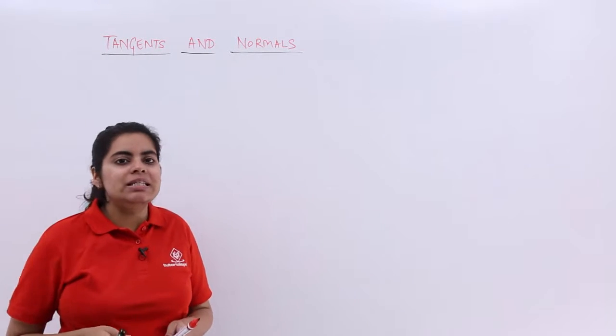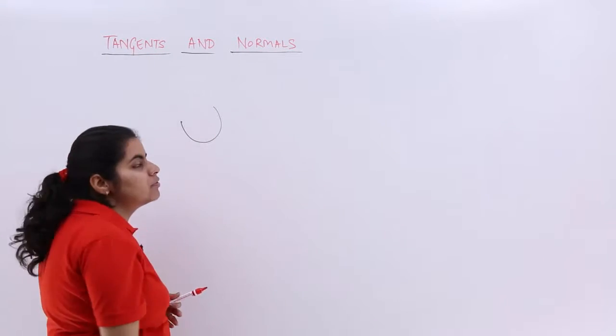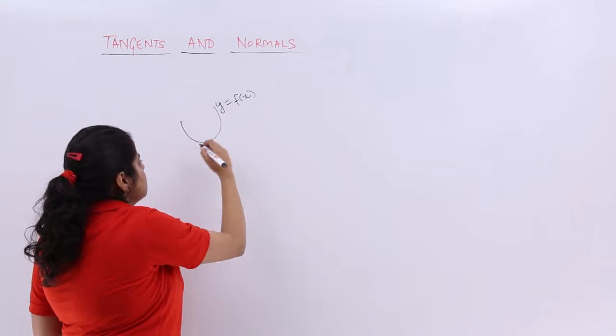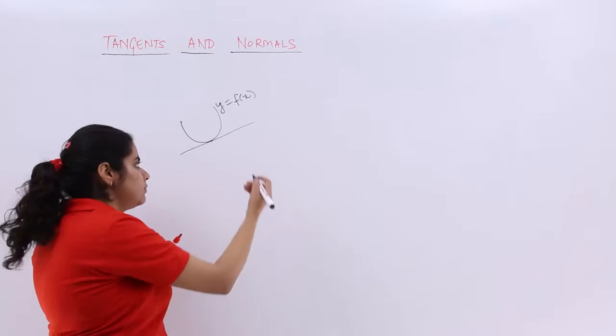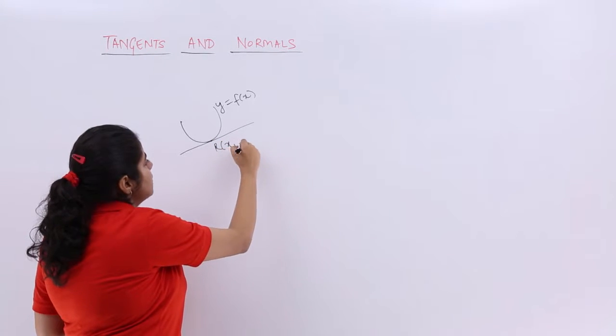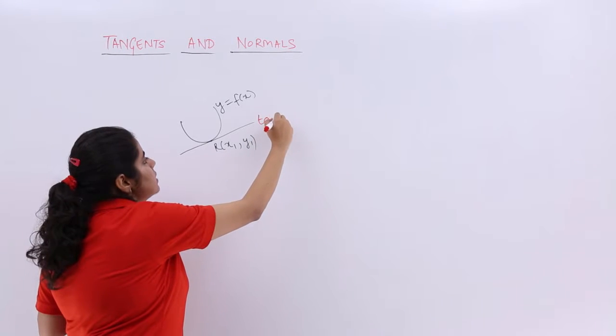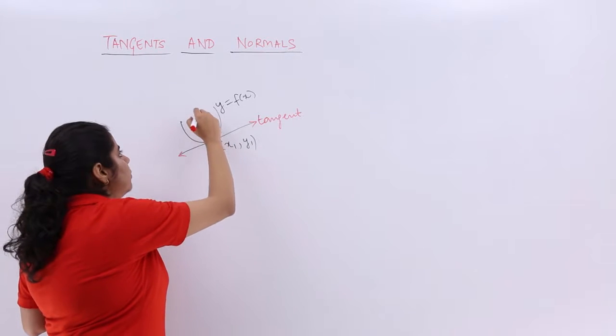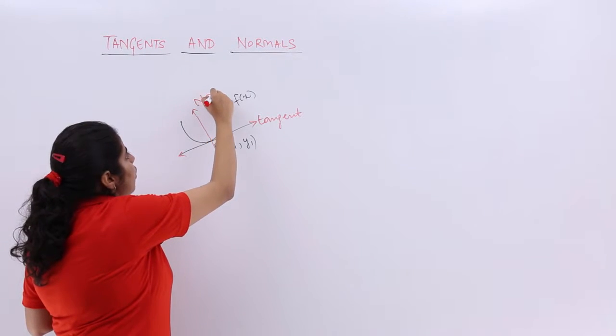We have already seen in the first video of tangents and normals something related to the curve. We said if this curve is known as y equals f(x) and there is a tangent to this curve and the point is r(x₁,y₁), suppose this is the tangent. We also said that there is a normal and it was just perpendicular to the tangent. So that is your normal.